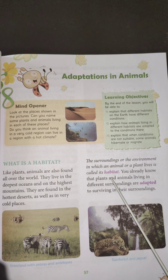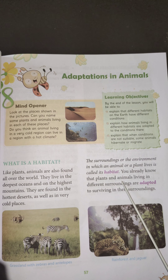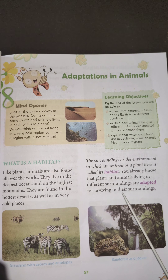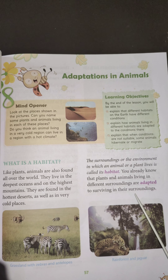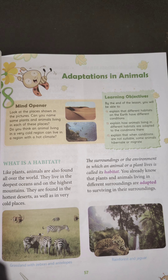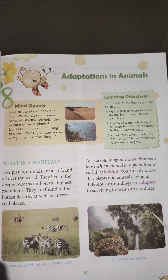What is our habitat? Our habitat is land — we live on land. Plants and animals living in different surroundings are adapted to surviving in their surroundings. In these two pictures, you can see a grassland with zebras and antelopes, and a rainforest where you can see a leopard-like animal called a jaguar.